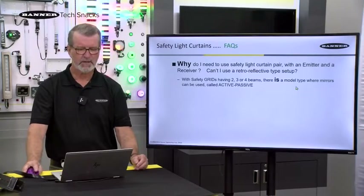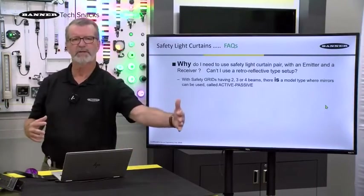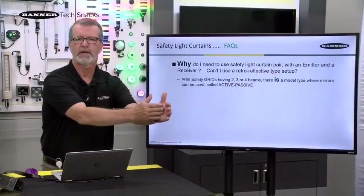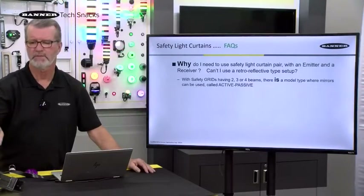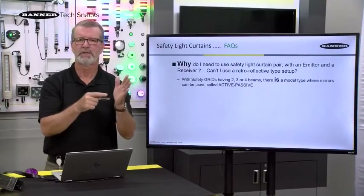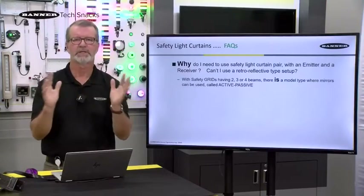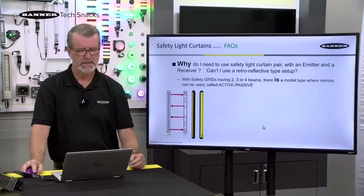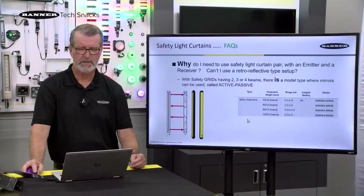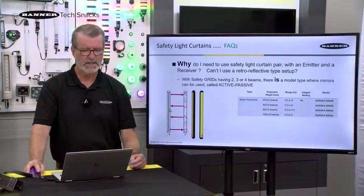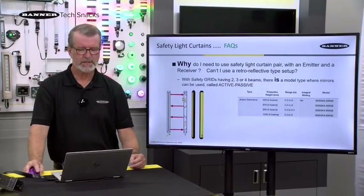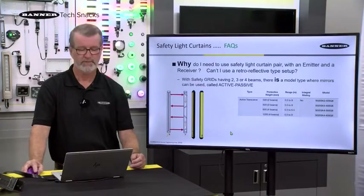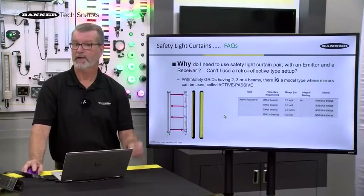Why do we need to use a safety light curtain emitter-receiver pair? Why can't we use something retro-reflective, just shooting off a mirror and coming back? Well, when we're looking at light curtains, we need to be able to monitor every single beam. To get that individual beam detection, you cannot get a mirror to match up to every single beam. However, there is something that uses a mirror — our grids. This is one of our products using what's called active-passive mode, where there's a transceiver on one side that bounces off angled mirrors on the opposite stick. It takes no power to go to the other side of that conveyor. It's actually a four-beam grid produced by using two mirrors internally.